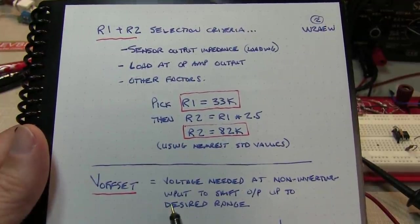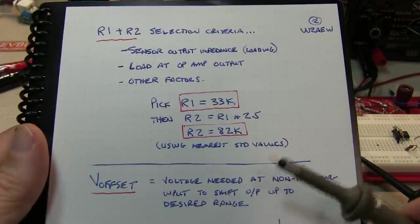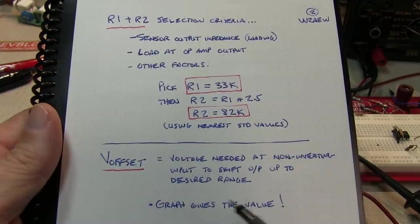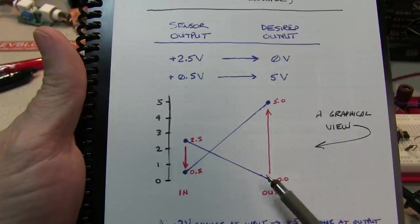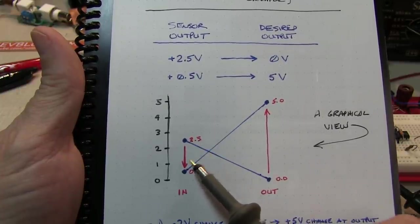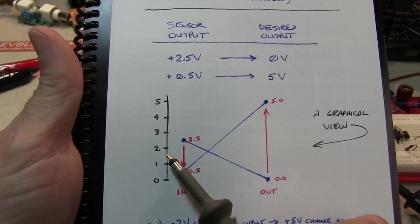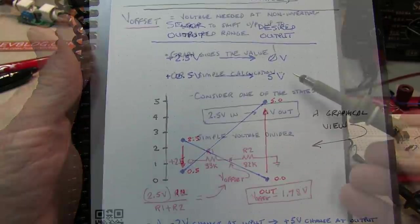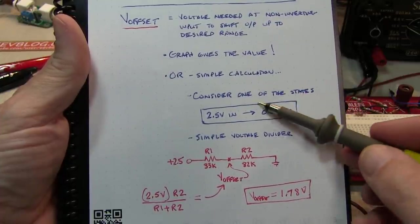The next thing we need to look at is the offset voltage that's applied to the non-inverting input in order to get the output to be in the right range. It turns out that graphical thing I showed you on the previous page gives us the value. By connecting the dots of these two conditions, where those two points cross is where they'd cross for any value in this relationship. That value, which is approximately about 1.8 or so, is actually the offset voltage.